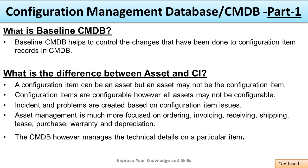What is the difference between an asset and a CI? A configuration item can be an asset, but an asset may not be a configuration item. Configuration items are configurable; however, all assets may not be configurable. Incidents and problems are created based on the configuration item issues. Asset management is much more focused on ordering, invoicing, receiving, shipping, lease, purchase, warranty, and depreciation value.